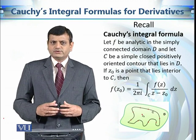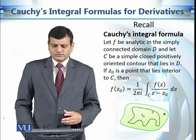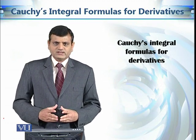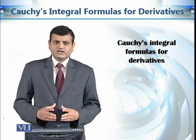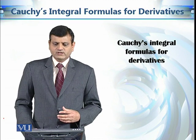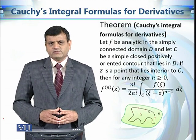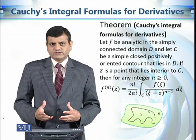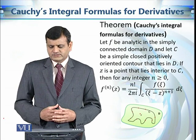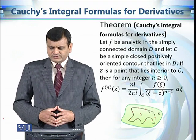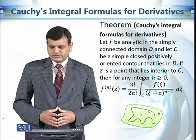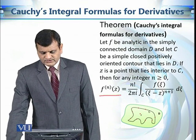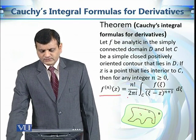Now we are going to see that not only the functional values but also the derivatives can be calculated in a similar way. The formula is not going to be the same, but it is a kind of generalization of Cauchy's integral formula. Under the same conditions — analytic function in a simply connected domain D, simple closed positively oriented contour — for any integer n ≥ 0 and any point z inside the contour C, the nth derivative can be evaluated in the following way.